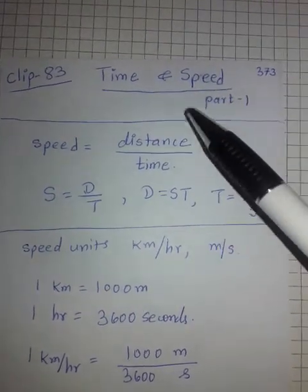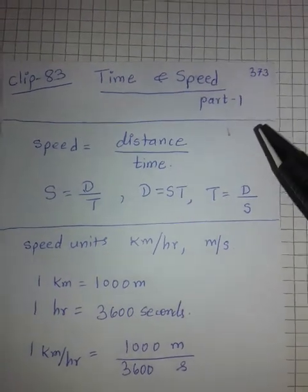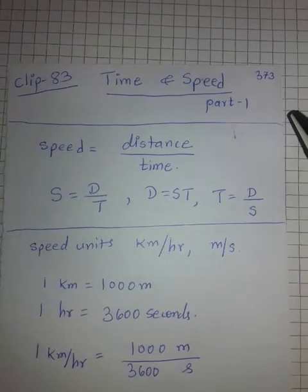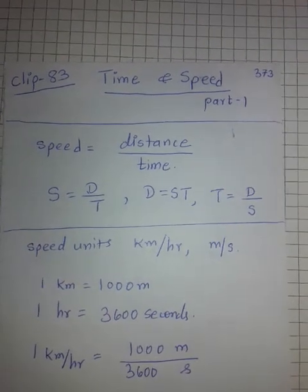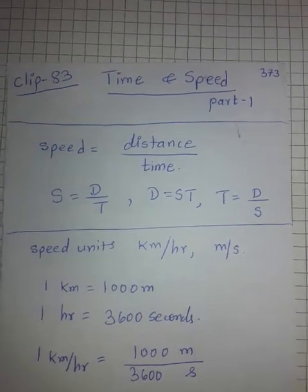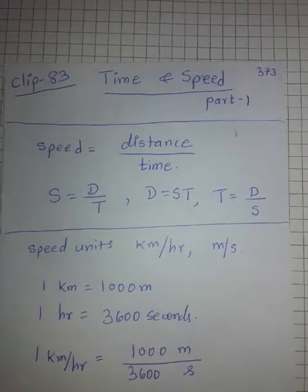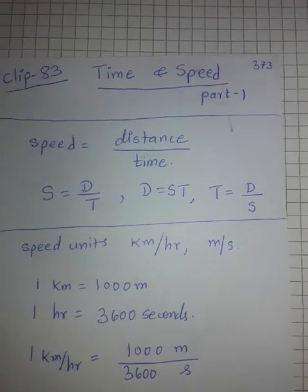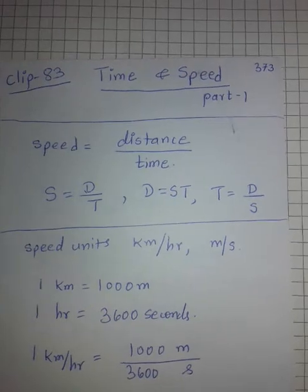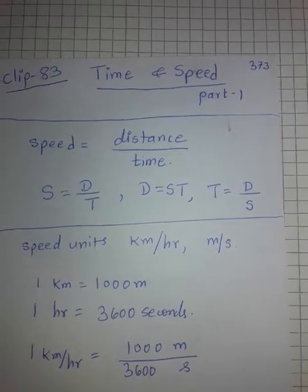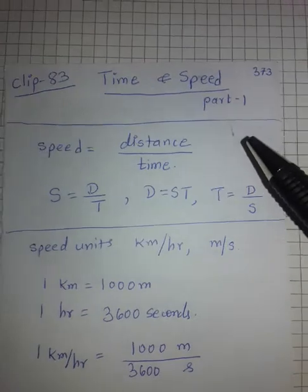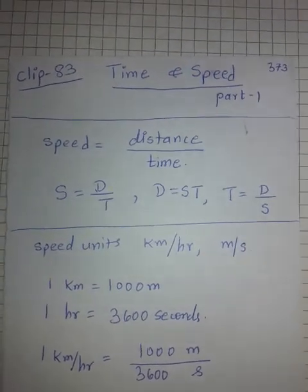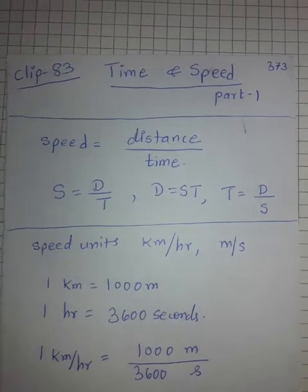Today is Part 1 and we are going to cover all basic concepts. Many students find this topic very confusing because there is a variety of problems — sometimes there are trains crossing a platform or a man, trains coming from the opposite direction or following the same direction, boats and streams, conversions from kilometres per second to metres per second, average speed, and many other confusing problems. Students prefer to skip this topic totally, so let's not do that.